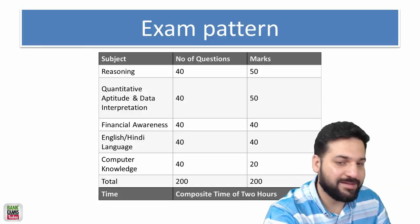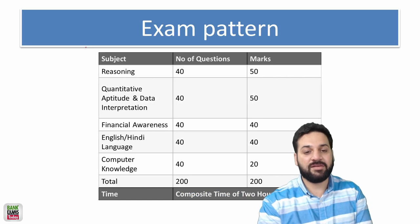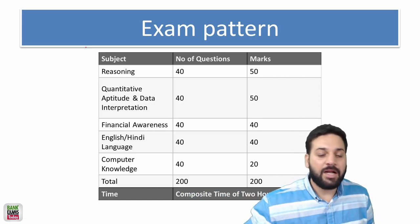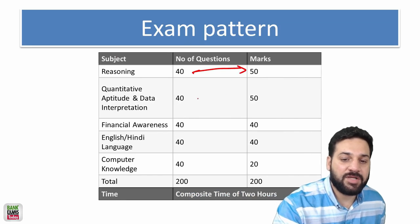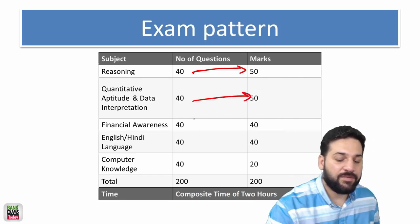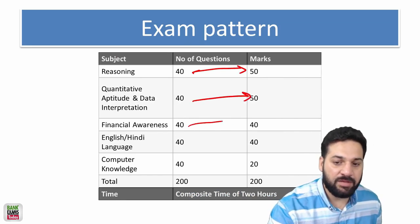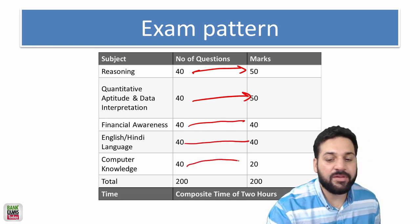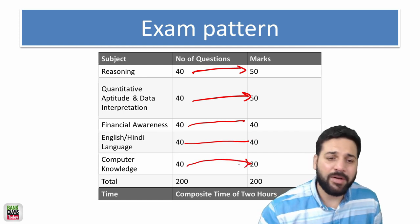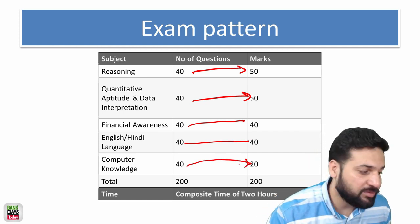Let's start with the exam pattern. Reasoning ability and quantitative aptitude with data interpretation: 40 questions but there are 50 marks. For the rest of the paper, financial awareness 40 questions 40 marks, English 40 questions 40 marks, and computer knowledge 40 questions and 20 marks. One more important thing, a lot of students ask me.